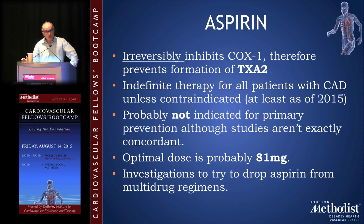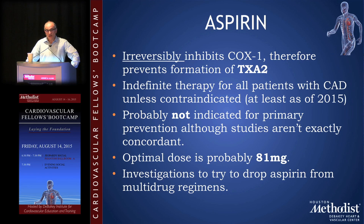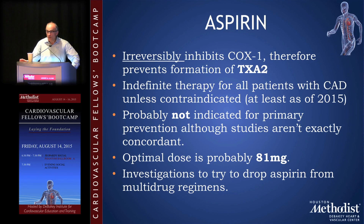It's probably not indicated for primary prevention, although the studies aren't exactly concordant — they're so close to the line of unity that the pendulum shifts every year. When patients ask me should I take an aspirin a day, I say you only take it in the years when the pendulum has swung to the positive side. The optimal dose of aspirin is 81 milligrams.